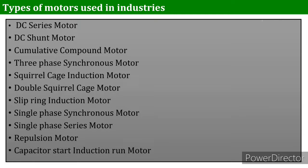Now we will have a brief look at types of motors used in industries. I have selected some types and will explain them very briefly so we can recall the basic principles. The first type is the DC motor. Since it has high starting torque and variable speed, it is used for heavy-duty applications such as electric locomotives, steel rolling mills, hoists, lifts, and cranes.